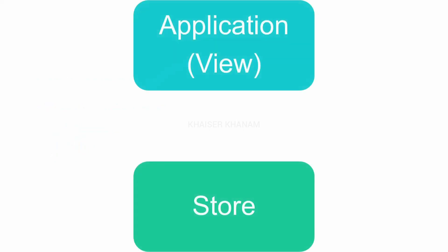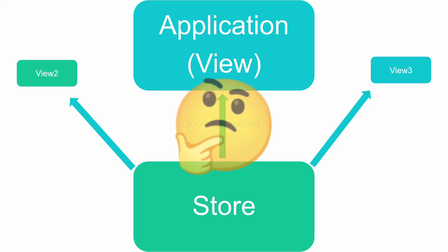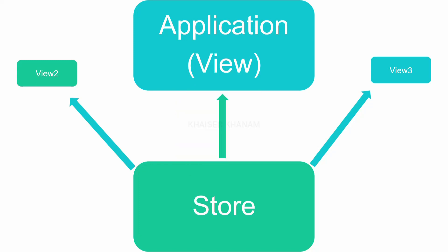As we have already seen, in Redux the entire application state data is stored inside the store. So if my application wants the data, it can directly call the store and get the data. Not only one component — we will have plenty of components, and all of them can get the data directly from the store.